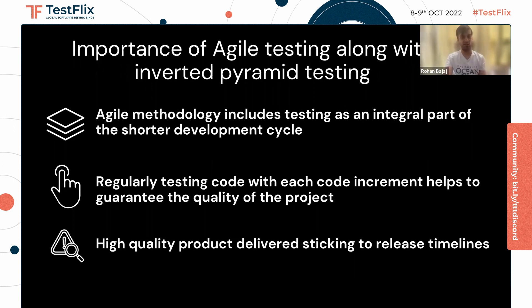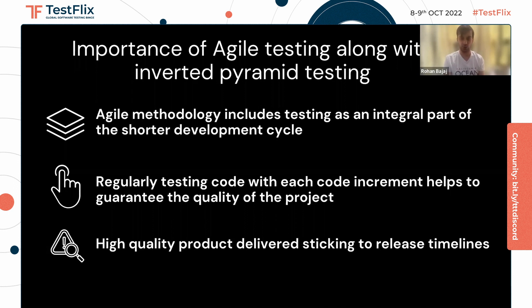Let's also quickly look at the importance of agile testing along with inverted pyramid testing. Agile testing is important because it includes testing as an integral part of the shorter software development lifecycle (SDLC). We are regularly testing the code with each increment, which helps guarantee the quality of the project. It's part of what CI does, but on top of that we have unit tests from developers where a certain threshold is fixed as a minimum percentage required, and those run on each code review. At the same time, pre-check-in automated tests are also being run, which helps catch bugs. Only if the tests pass are the pull requests allowed to be merged. Ultimately, a high quality product will be delivered sticking to the release timelines when combining the best practices of agile with inverted pyramid testing.